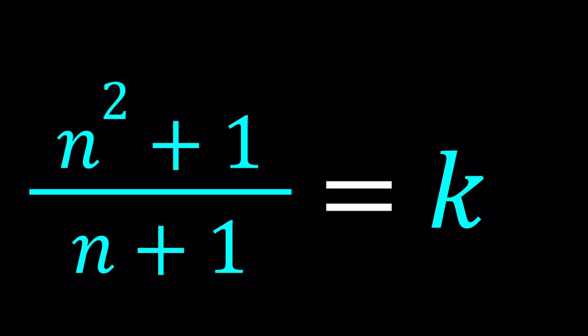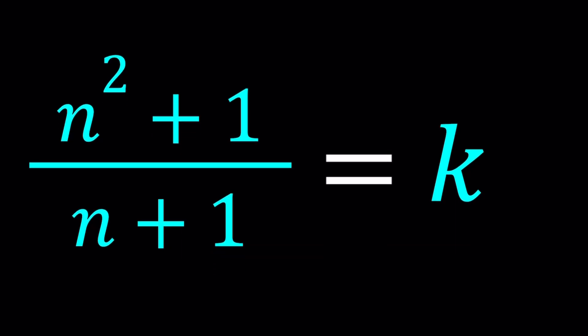Hello everyone. In this video, we're going to be solving a Diophantine equation, in other words, an equation with integer solutions. We have n squared plus one divided by n plus one, and that is equal to k. n and k are both integers. I'll be presenting two methods, and if you can come up with a third one, please let us know in the comment section down below.